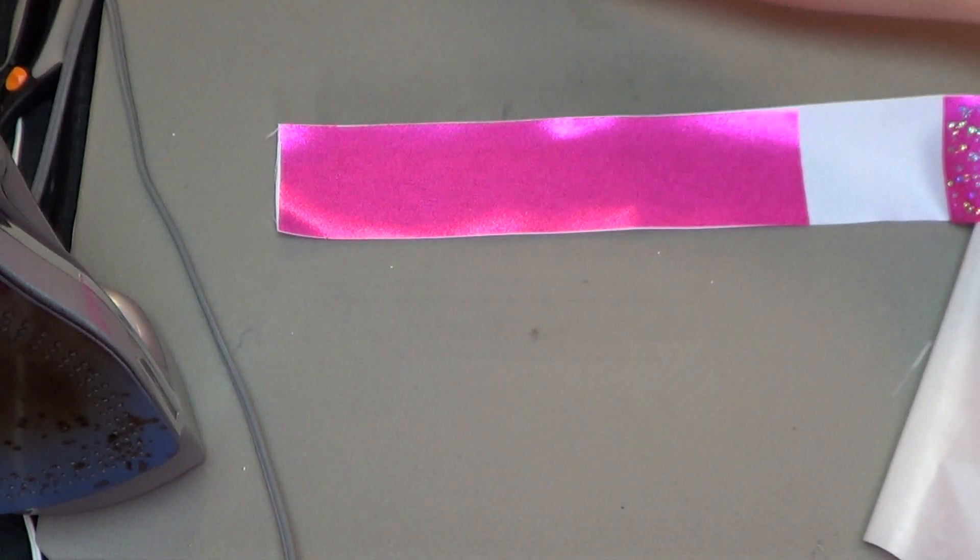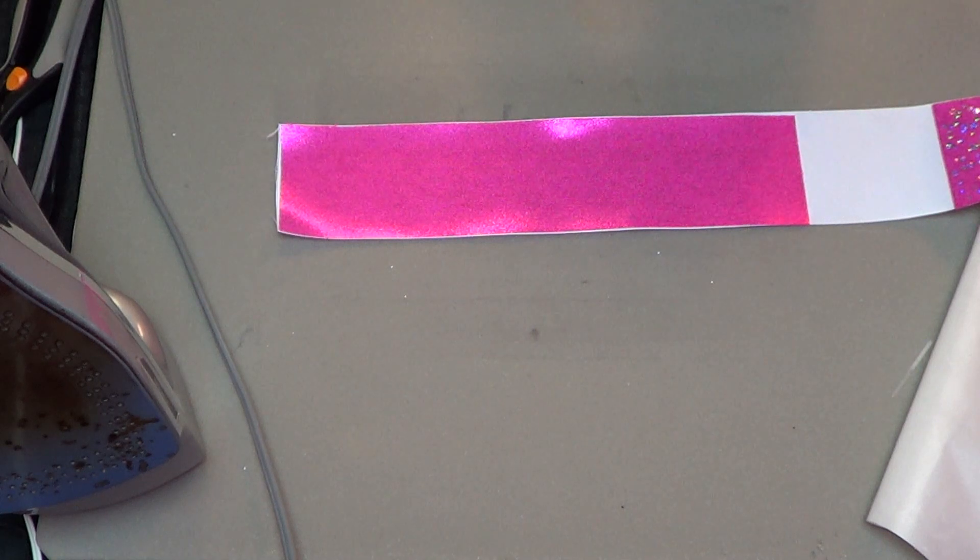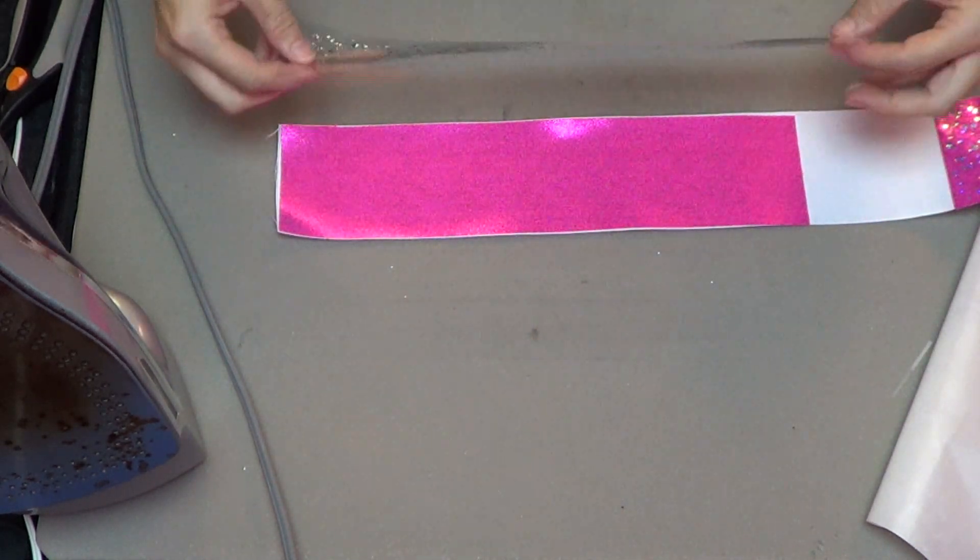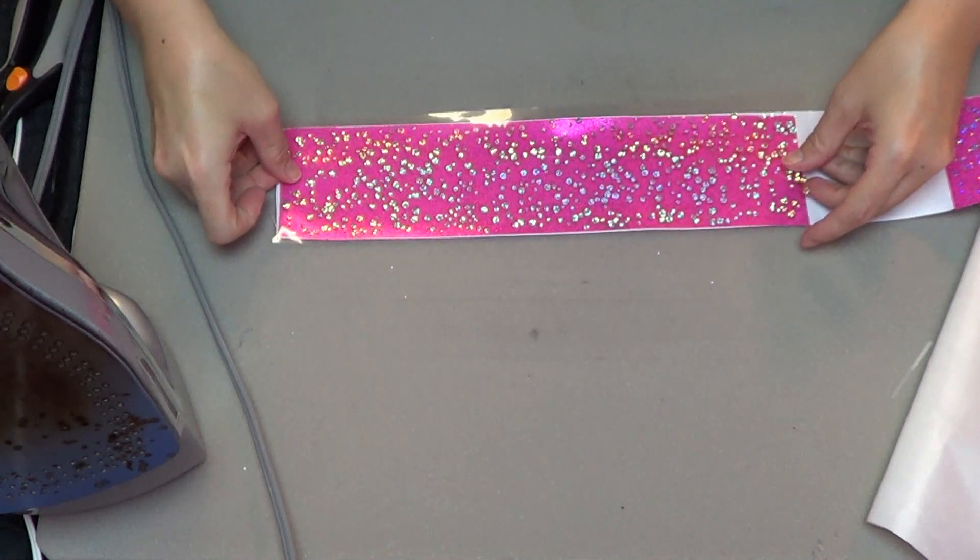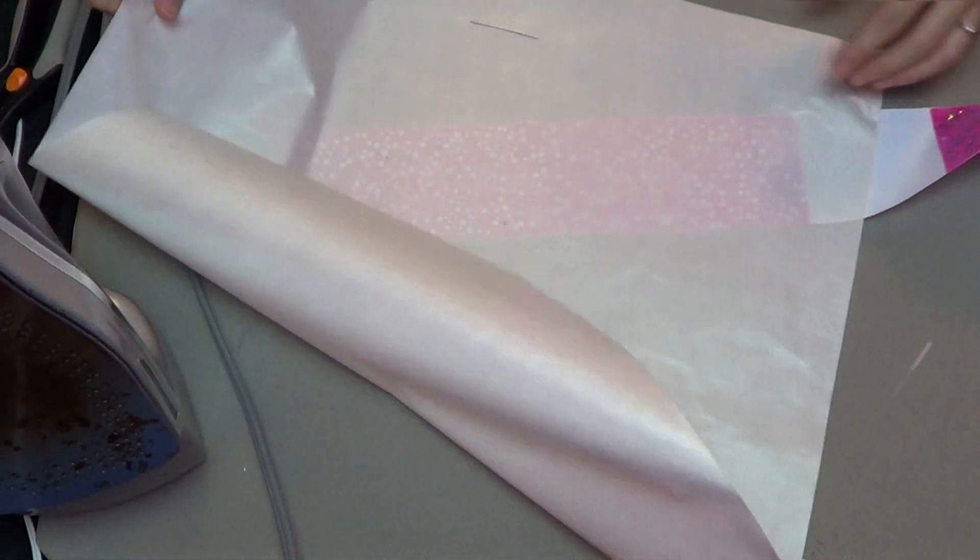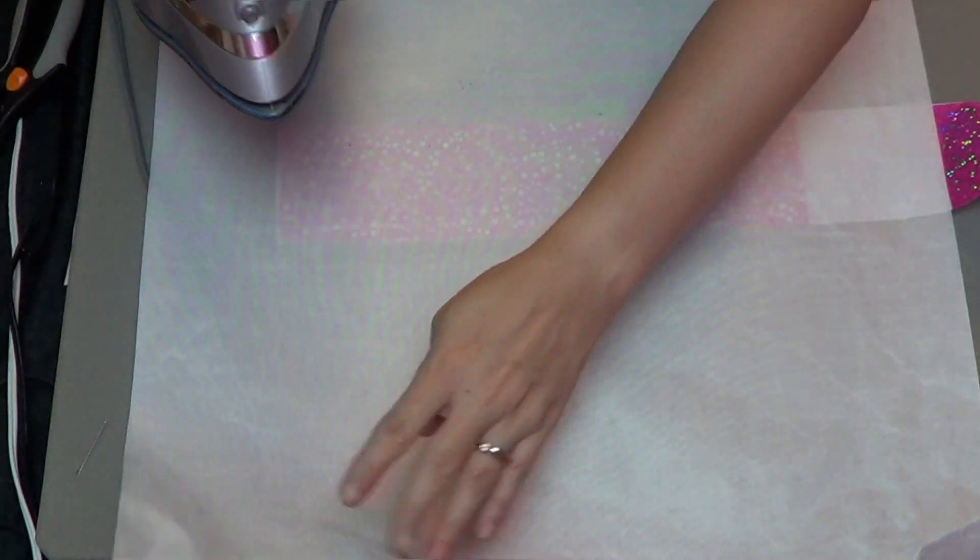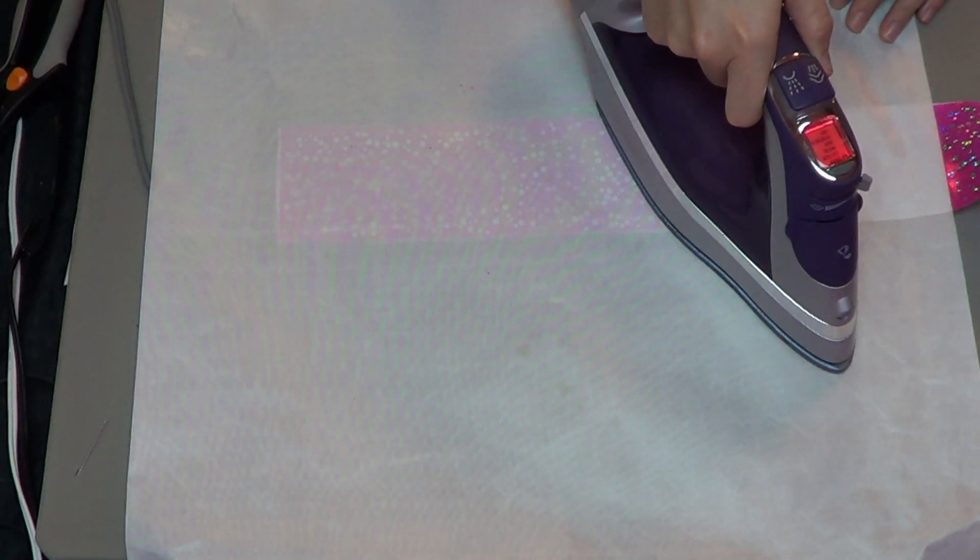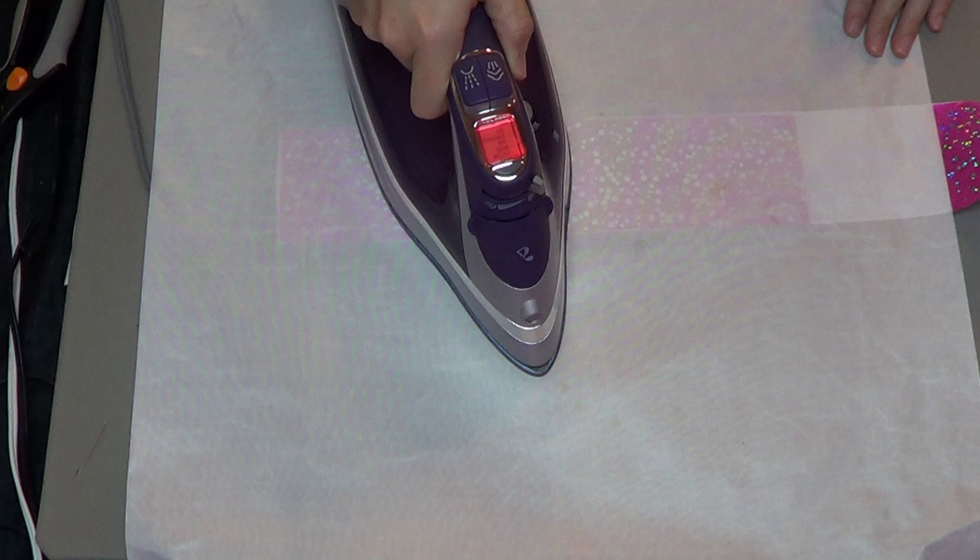Now you can go ahead and do the same thing to the other side. Place the spangles right on top. If you're not familiar with spangles, they are basically a holographic dot that has just as much light reflection as a rhinestone.